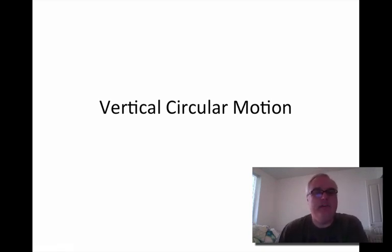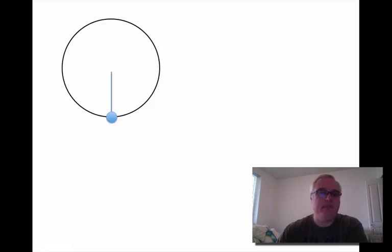Okay, the other type of circular motion we're going to talk about is vertical circular motion. Suppose we had a ball tied to the end of a string, and we're rotating it in a circle.